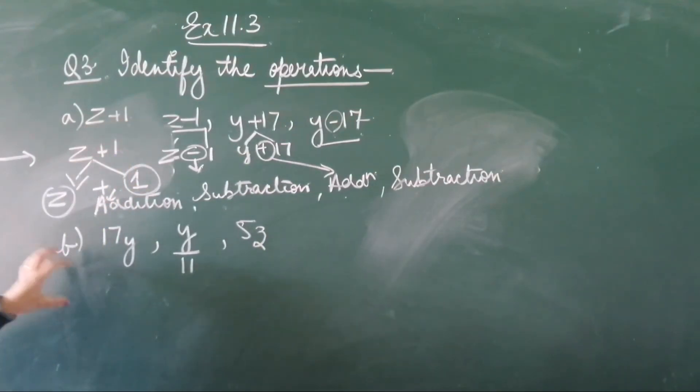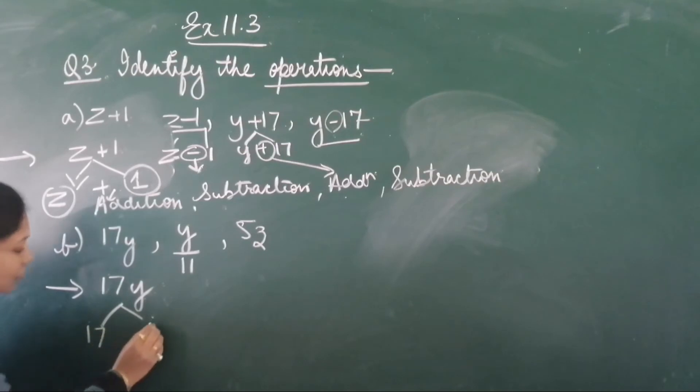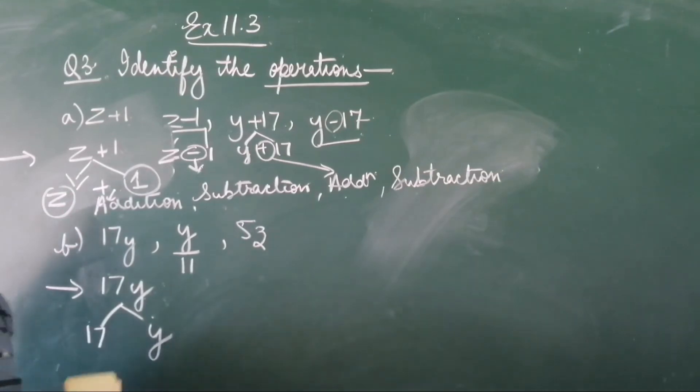This is how you will do. Let me do the B part, the same way you will do it in your notebook. Now for B part, first is 17y. So how many terms you have children here? You have 17 also and y also. 17y, what do you mean by 17y? You must be thinking, ma'am, here there is no sign.